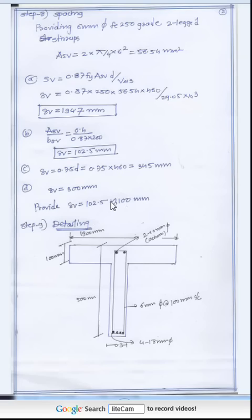Among the values 194 mm, 102.5 mm, and 300 mm, the minimum is 102.5 mm. So we provide 100 mm bar spacing.